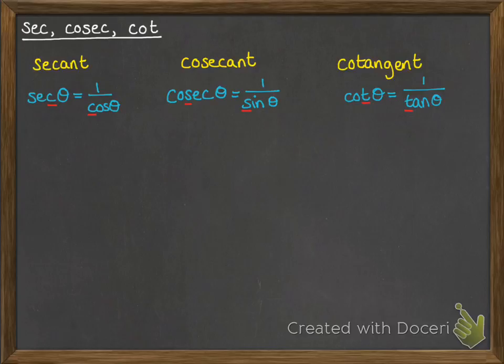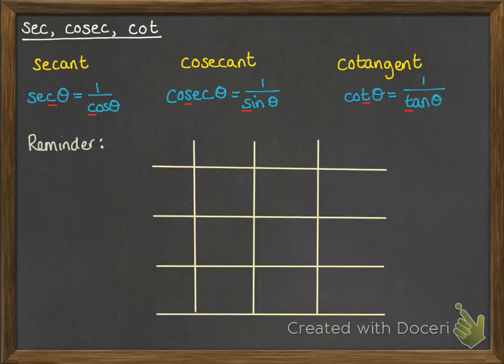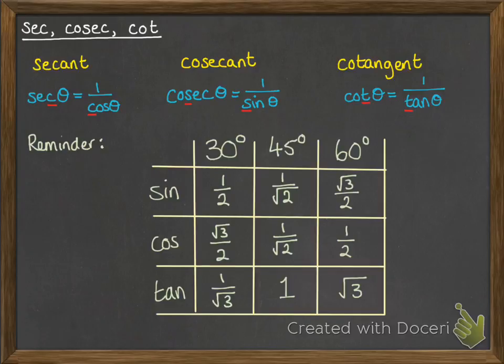There are some special trig values that you need to have memorised, or at least be able to find them from those special triangles. You did these last year — here's a little reminder. If you can't remember them, write them down and have them somewhere handy as a reference, but for exam purposes you will need to memorise these. You also need to recognise them quite easily and get used to using them.